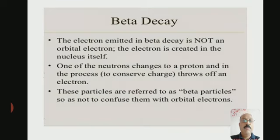The electron emitted in beta decay is not an orbital electron. The electron is created in the nucleus itself. The orbital electron is not emitted at all. The nucleus itself creates one electron, and that electron is liberated and emitted.